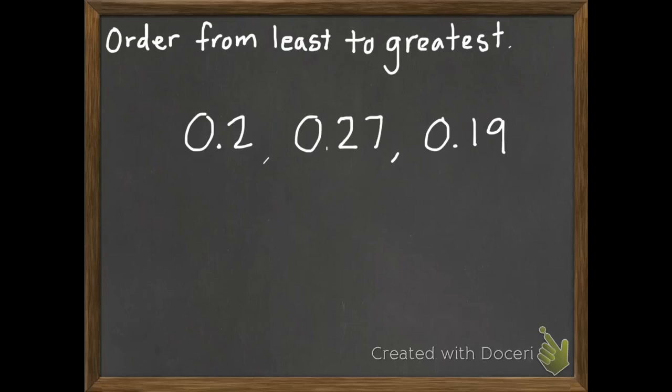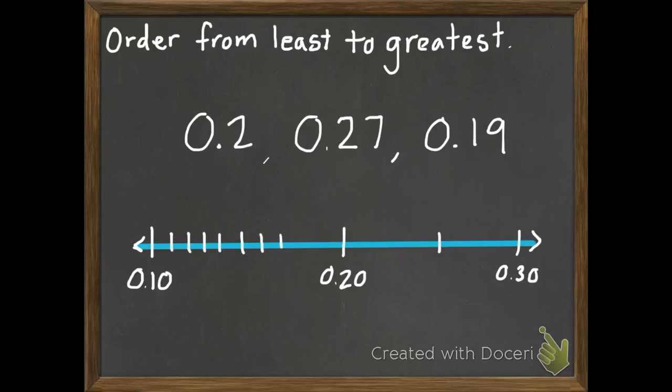We could draw pictures again. But another strategy that we can use is to put dots on a number line. So here's my number line. I have 10 hundredths, 20 hundredths, and 30 hundredths, plus all the hundredths in between.